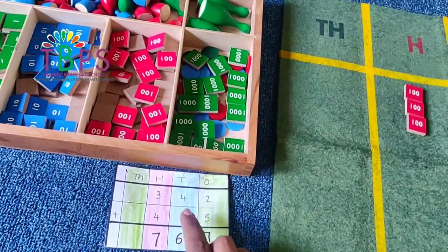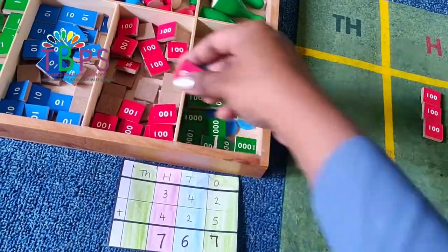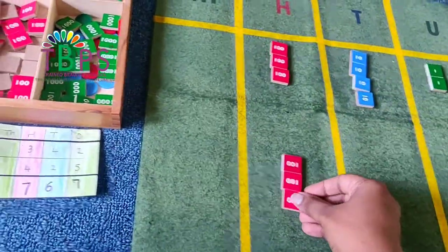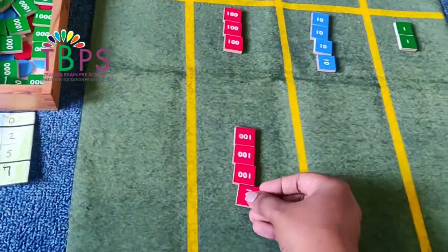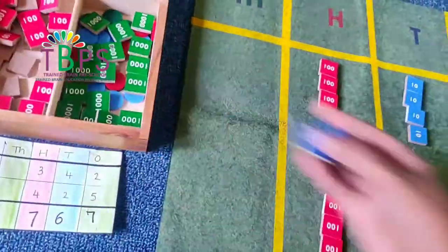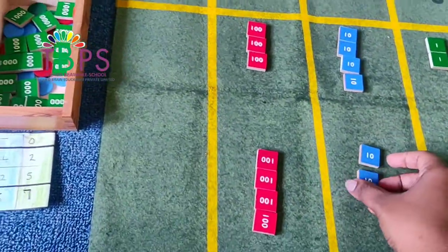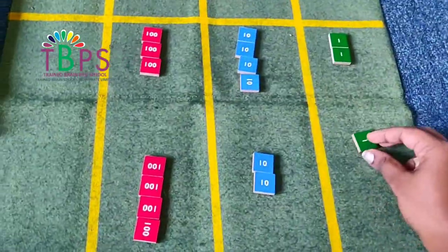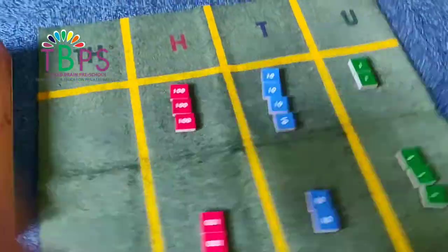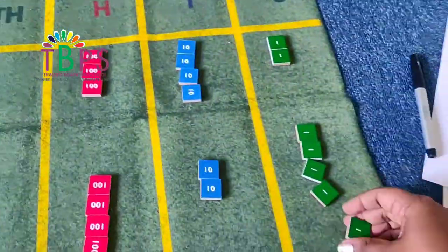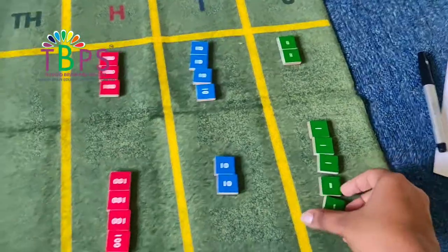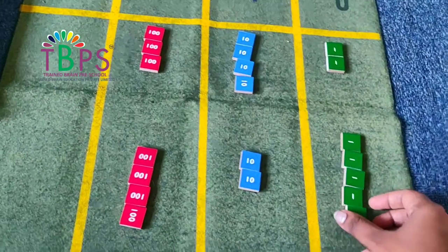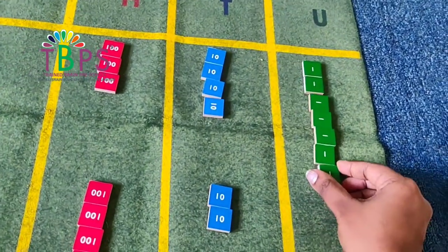Now let's move to the second number. It's 425, so you got to place 400: 100, 200, 300, 400. So I have arranged both my numbers.